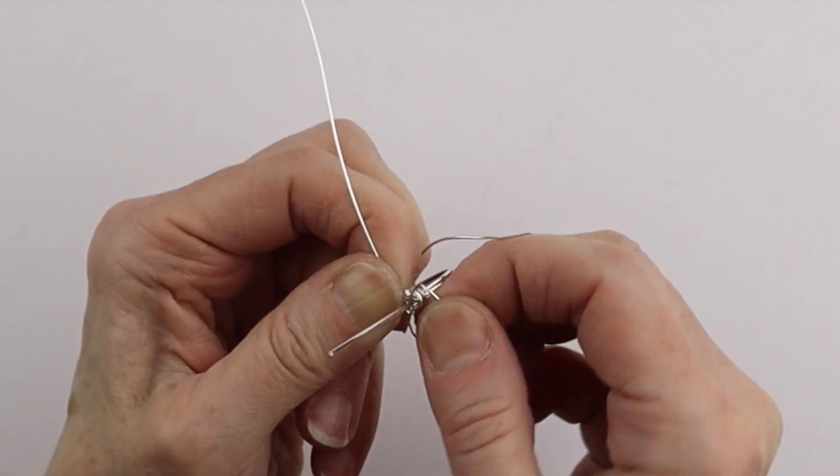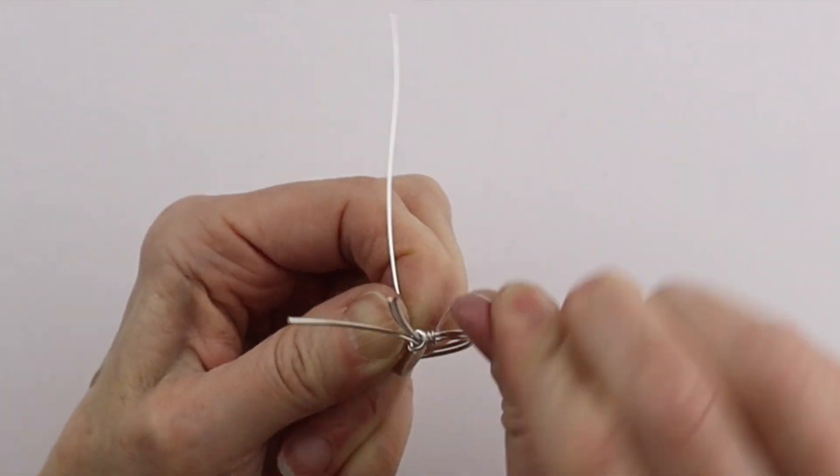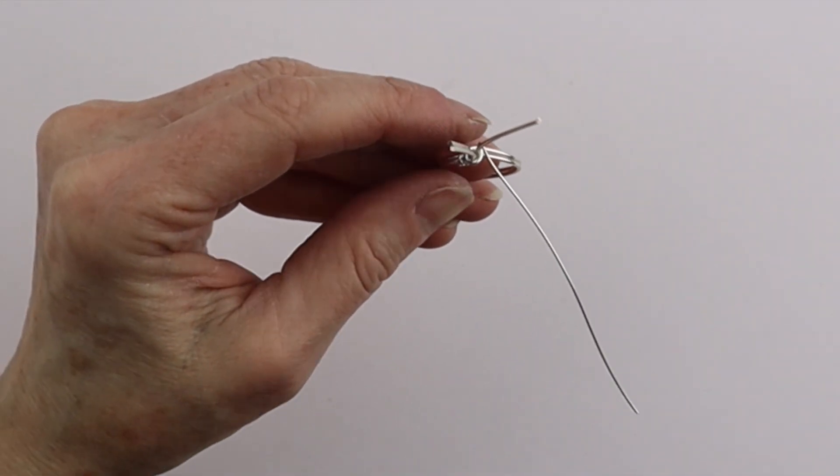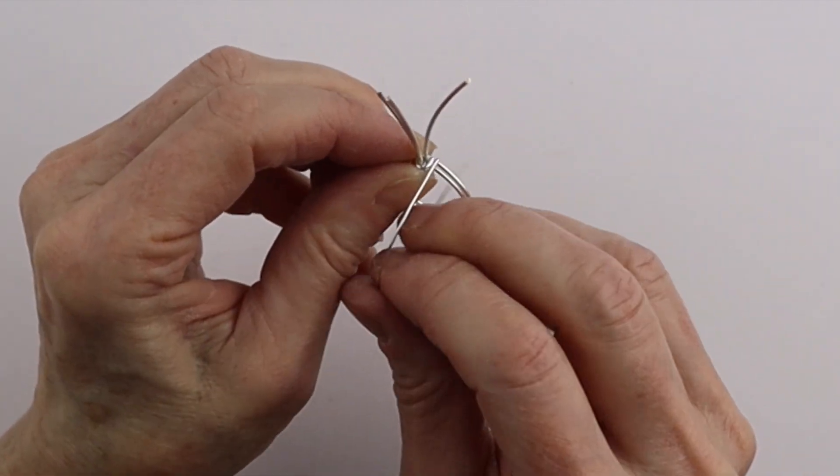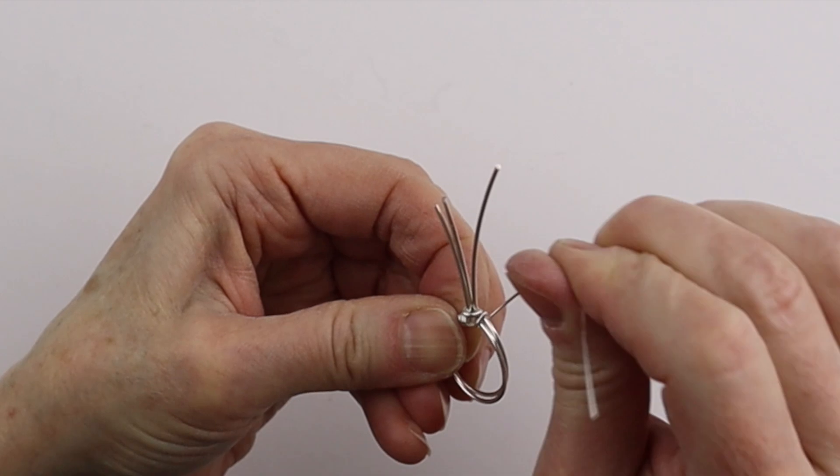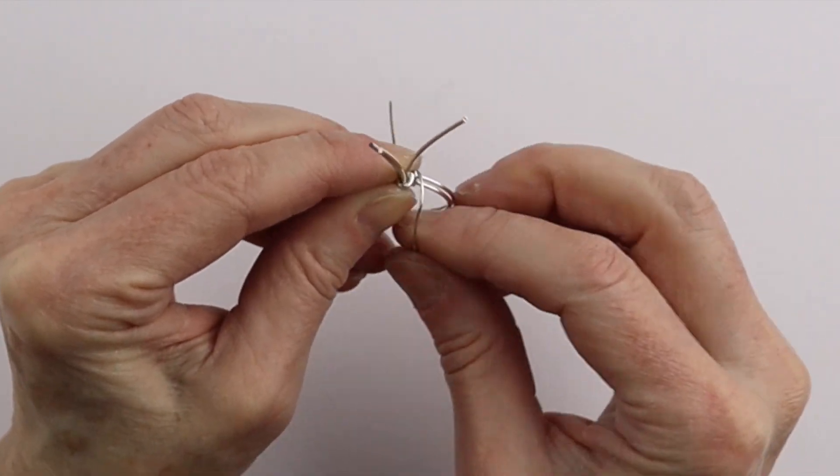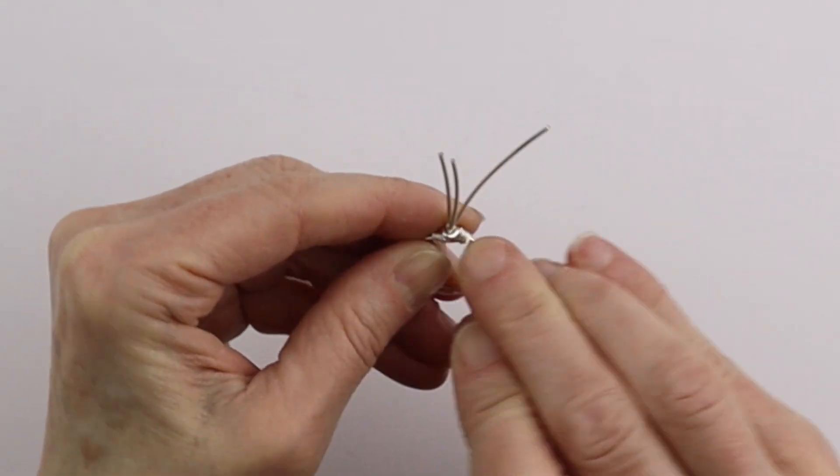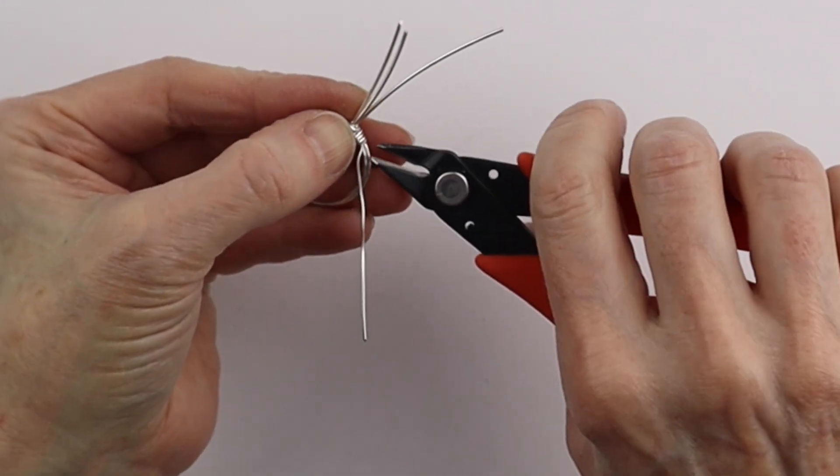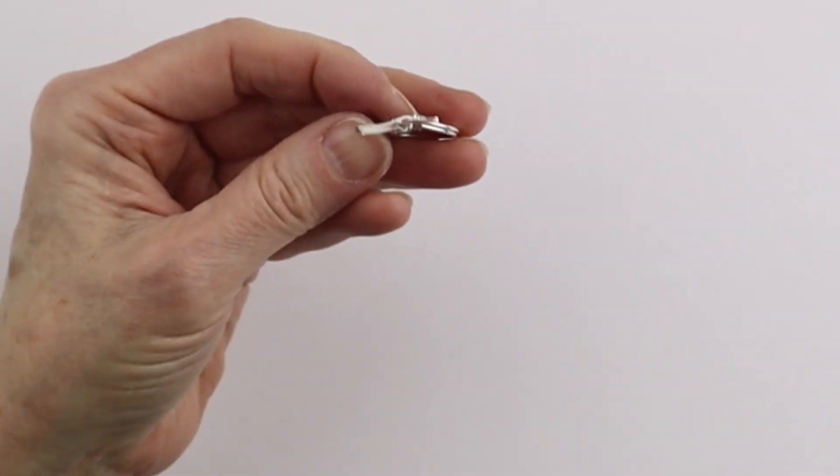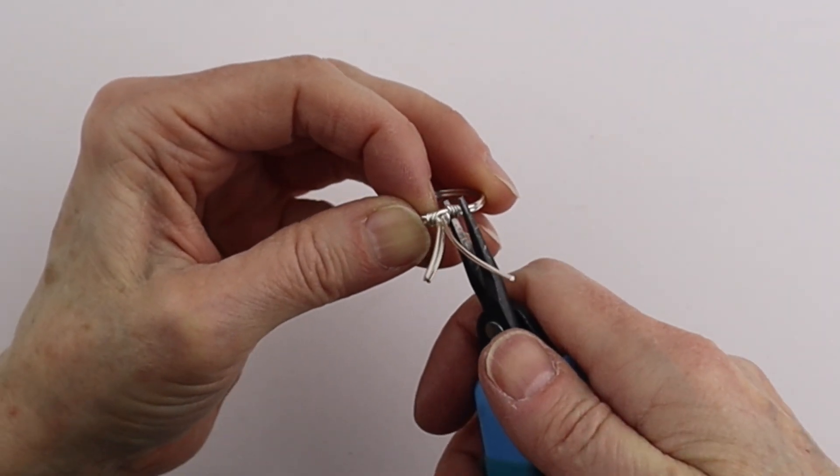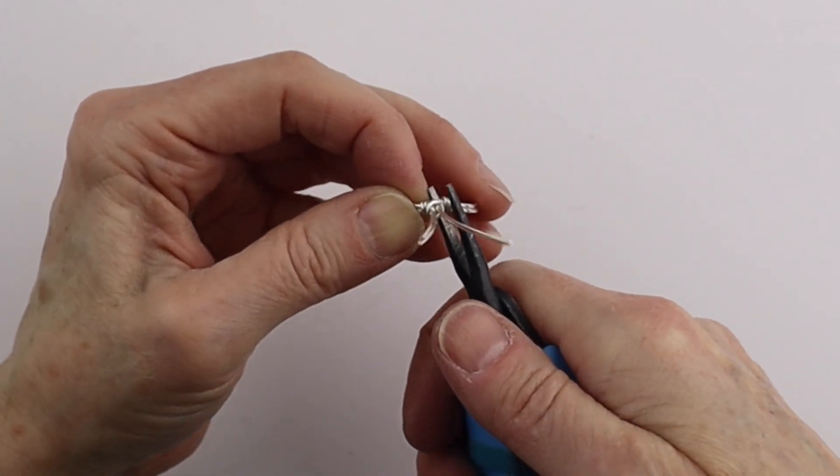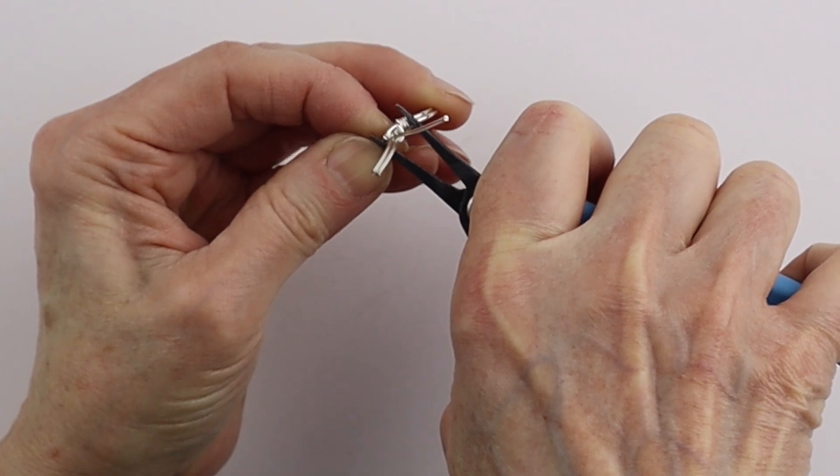So there's one, make sure you pull it snug, two, and three. Give it a clip and then we'll do this side. One, two, three. You could do it two or three times, however many you want. We'll give it a little clip and then you want to push these ends in.